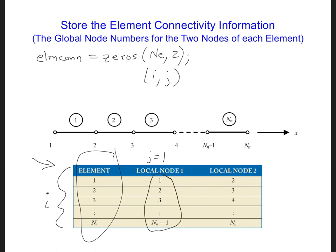And when the second index, j, is equal to 2, the numbers stored in the element connectivity matrix are the numbers in the third column of this table.